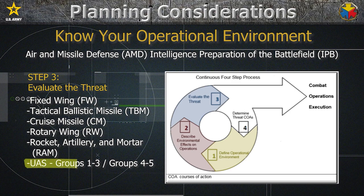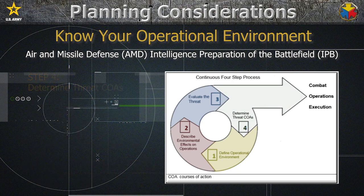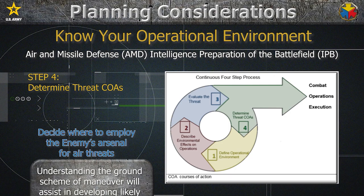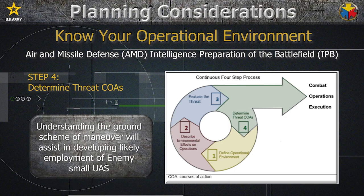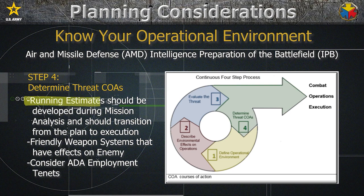Furthermore, you can break down the UAS into Groups 1 through 3 and Groups 4 through 5. Groups 1 through 3 fall within the low-flying threats, but Groups 4 through 5 will need to be defeated by resourcing assets at the division or higher echelon levels. Step 4, determine the threat COAs. Put on your red hat and decide where to employ the enemy's arsenal for air threats. Additionally, the low-level flying threats will likely support the units, so understanding the grand scheme of maneuver will assist in developing the likely deployment of enemy small UAS. Finally, the creation of running estimates should be developed during the mission analysis portion and should transition from the plan to execution.